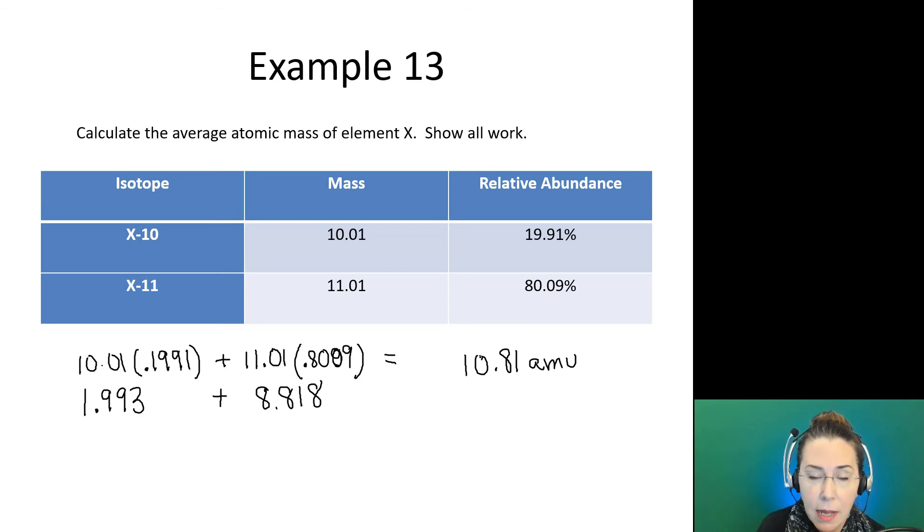Notice I have 4 sig figs in my masses. I have 4 sig figs in my relative abundances. I also have 4 sig figs in my final answer.